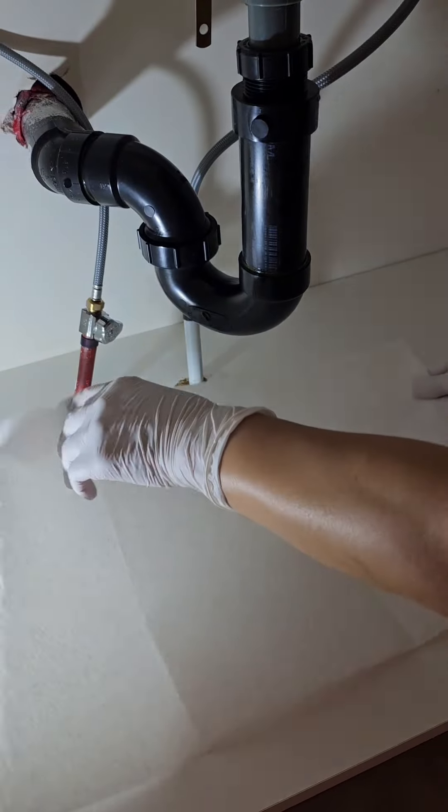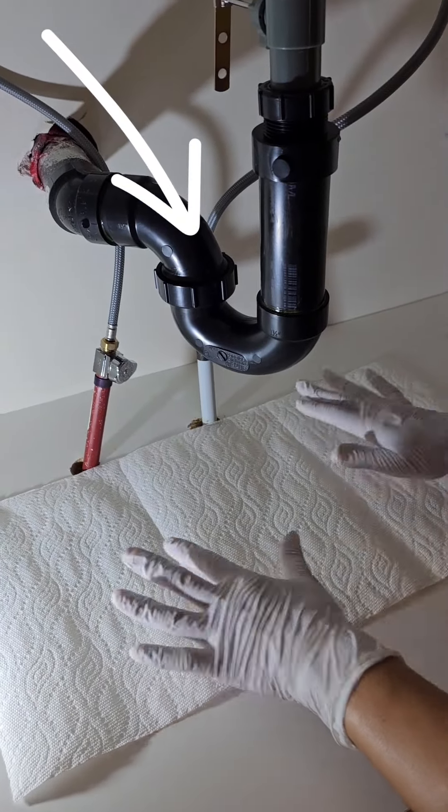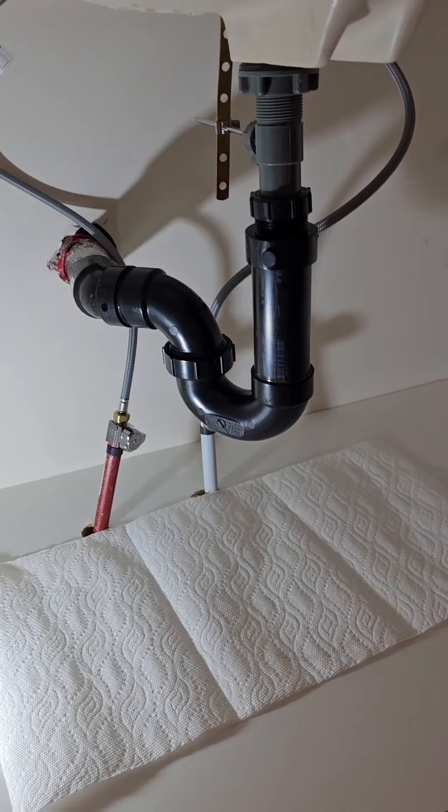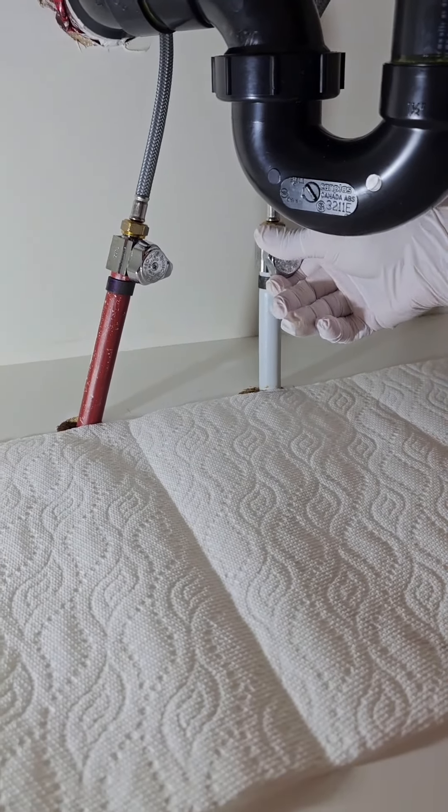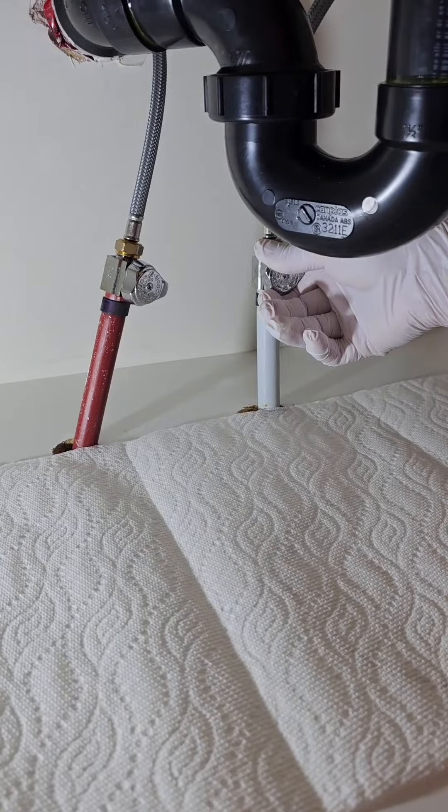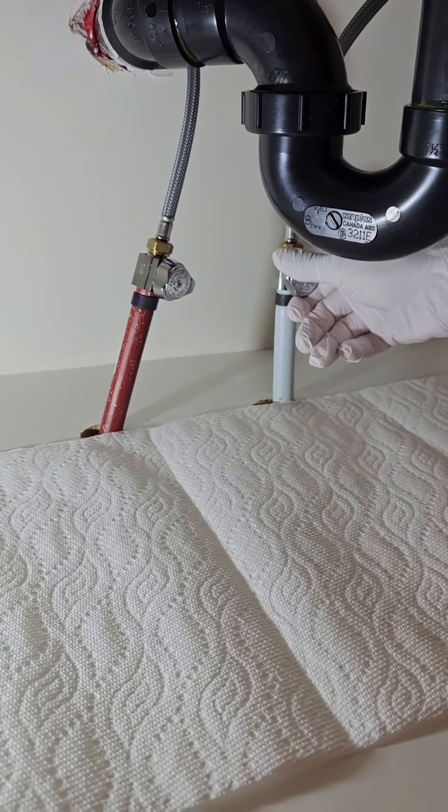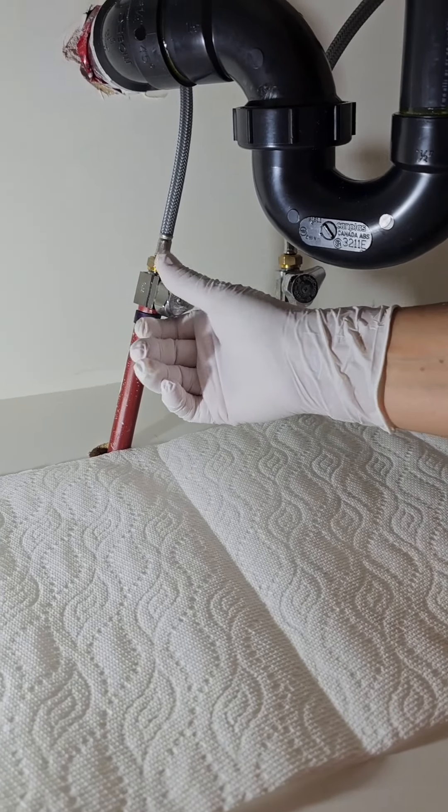Don't forget to tighten the P-trap arm before tightening anything because here water travels upward and there is more chance for leaks. Make sure your P-trap has a slight downward slope.